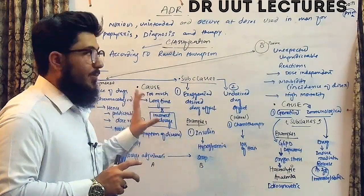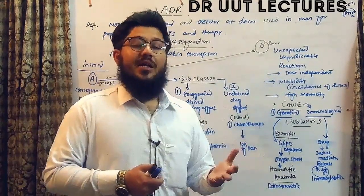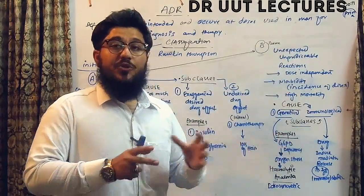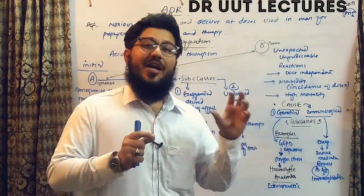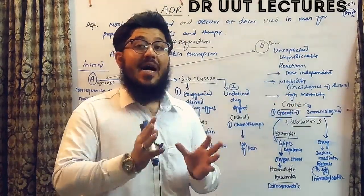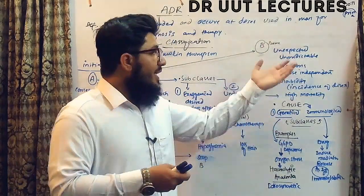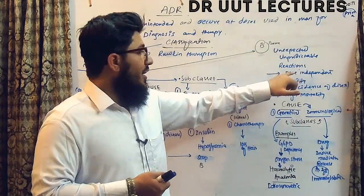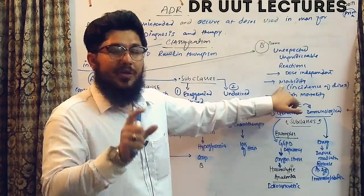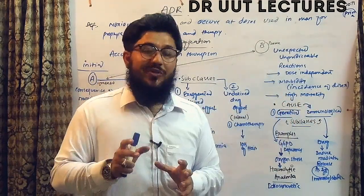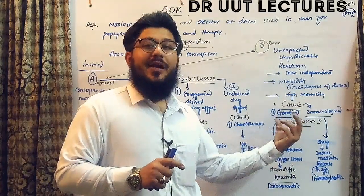Now let's come towards type B reactions, also known as bizarre reactions. Bizarre means unexpected or unpredictable reactions — we don't know about these types of reactions in advance. If you are taking a drug that has a particular known action but you see another unexpected reaction that is not known for that drug, these are classified as unpredictable reactions. They are dose-independent — not depending upon the dose taken — and they have high morbidity and high mortality. The causes are: number one, genetical; number two, immunological. These two are the subclasses of type B reactions.